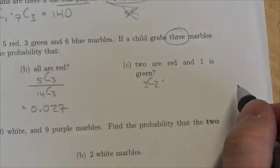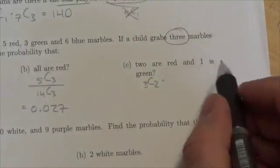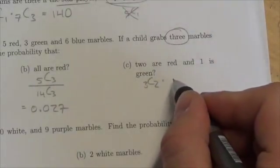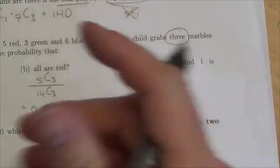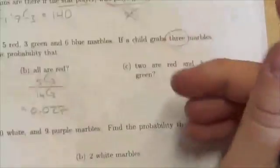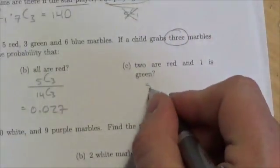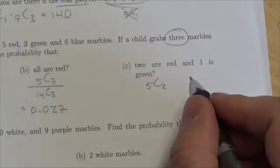And, which means multiplication, one is green. Well there are five... Sorry, I got that backwards there. Sorry, I got to fix that there. So two are red, that's going to be five choose two...